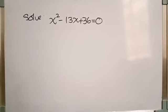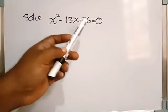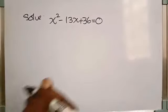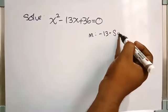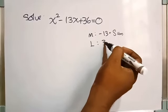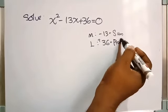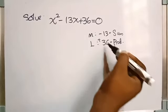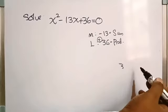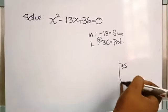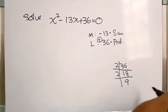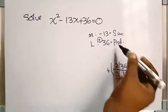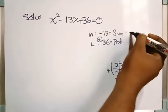Solve x squared minus 13x plus 36 is equal to zero. Here also we could find three terms — first term, middle term, and last term — so we can use splitting the middle term. The middle term is minus 13, which is the sum or difference, and the last term is plus 36, which is the product. As the last term is positive, both numbers are positive or both are negative. Let's find the numbers: 4 times 9 is 36, and 4 plus 9 is 13. So the numbers are minus 4 and minus 9.